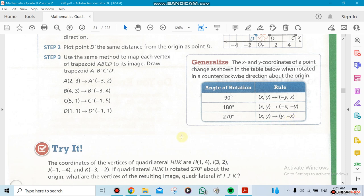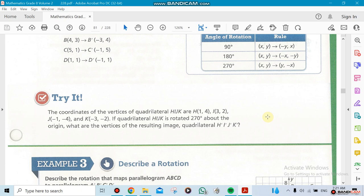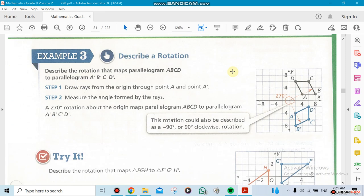The easy way to memorize: switch places and switch the sign of the first one for 90 degrees, switch the sign of the second one for 270 degrees. For 180 degrees, keep the same places but switch the signs of both X and Y. Memorize those three things and you can do everything in this section.